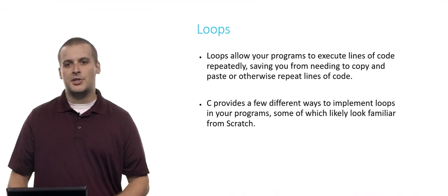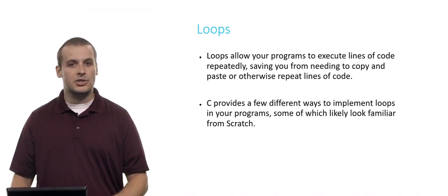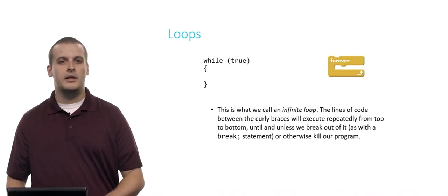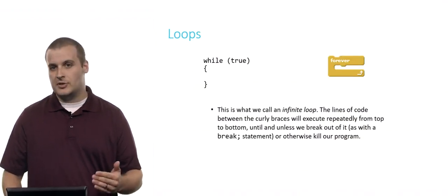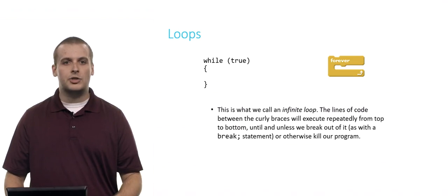Some of these loops are pretty familiar to you from Scratch, so again, as we did with conditionals, we'll put them up side by side if there is an analogy that we can draw. First is forever from Scratch, which compares to while true. This is what we call an infinite loop. The lines of code between the curly braces, much like the puzzle pieces that fit inside the C of the forever block, will execute repeatedly from top to bottom over and over and over forever.